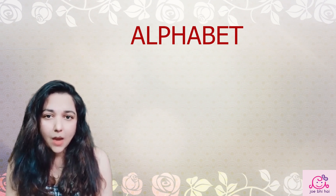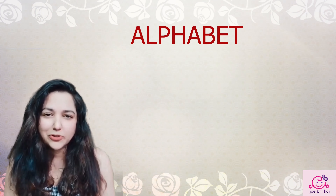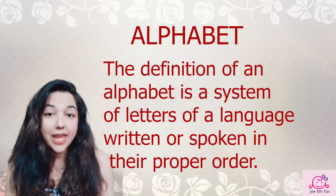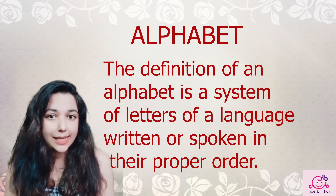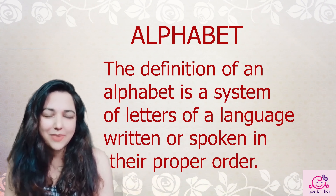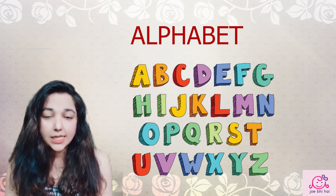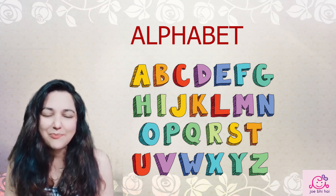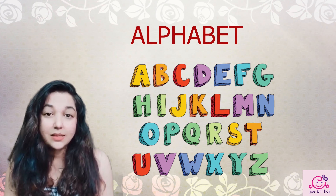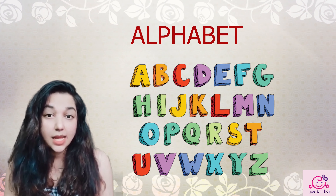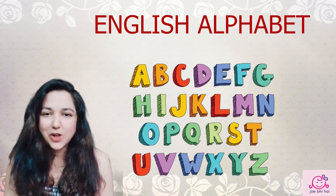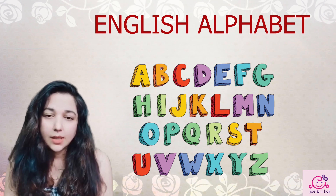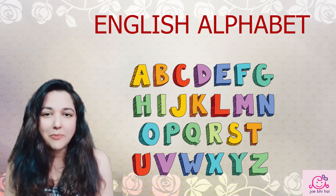Let's talk about alphabet first. A sequence of letters in a fixed order is alphabet. A, B, C to Z — this sequence is called alphabet. And since it's English, it's called English alphabet. A, B, C to Z is English alphabet.